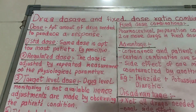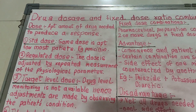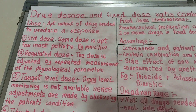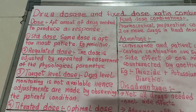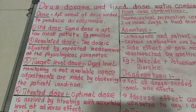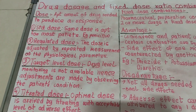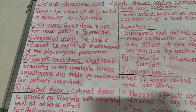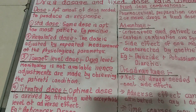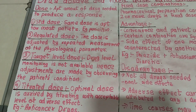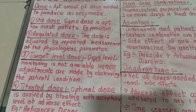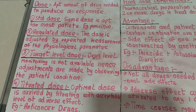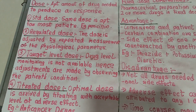So what is a dose? A dose is an appropriate amount of drug that is needed to produce any kind of response in the body. Dose is divided into many types: the standard dose, the regulated dose, the target level dose, and the titrated dose. I'll first read the definition and then try to explain it.